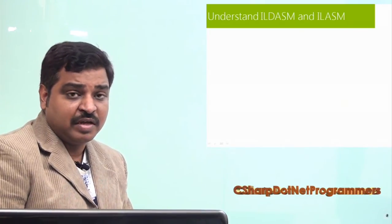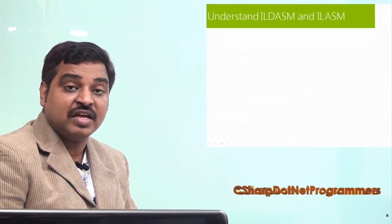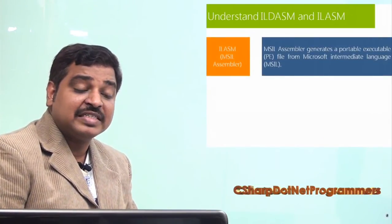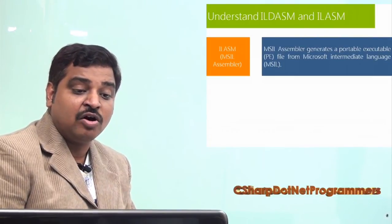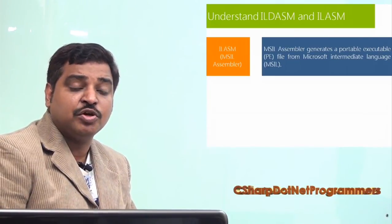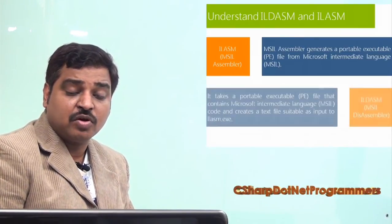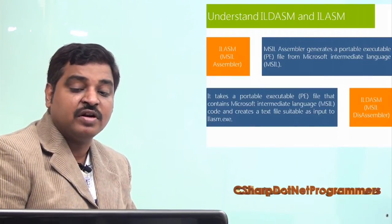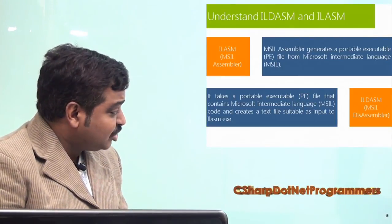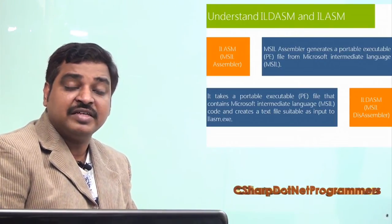Once we understand how this works, let's look more at the assembly in detail. We have something called an intermediate language assembler, or MSIL assembler, which is used to generate a portable executable file from MSIL. Similarly, we have ILDASM — intermediate language disassembler — which is used to convert a portable executable file into MSIL and create a text file based on it.